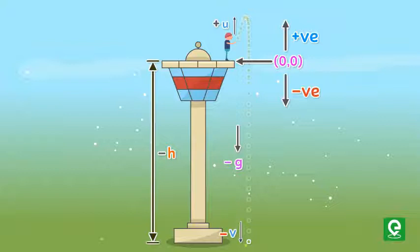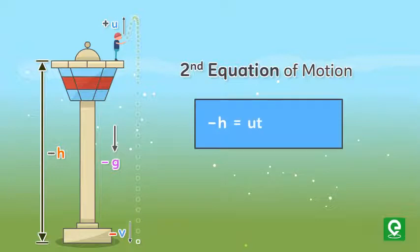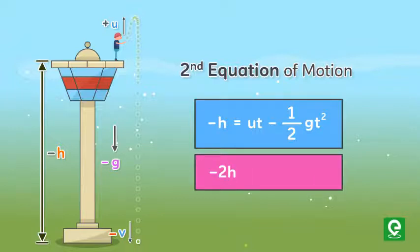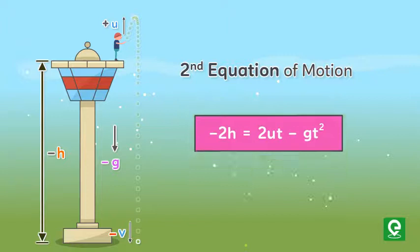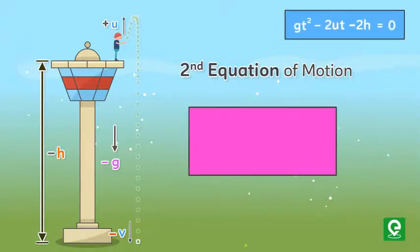Substituting these values in second equation of motion, we get minus h equal to ut minus half gt square. Multiplying by 2 on both sides, we get minus 2h equal to 2ut minus gt square, or gt square minus 2ut minus 2h equal to 0.